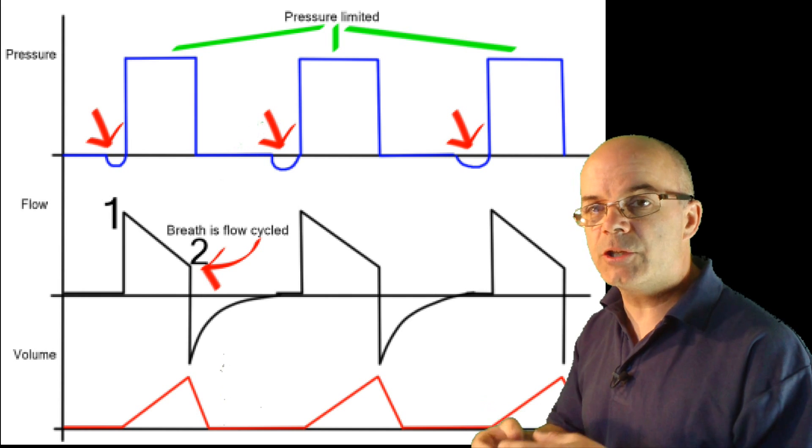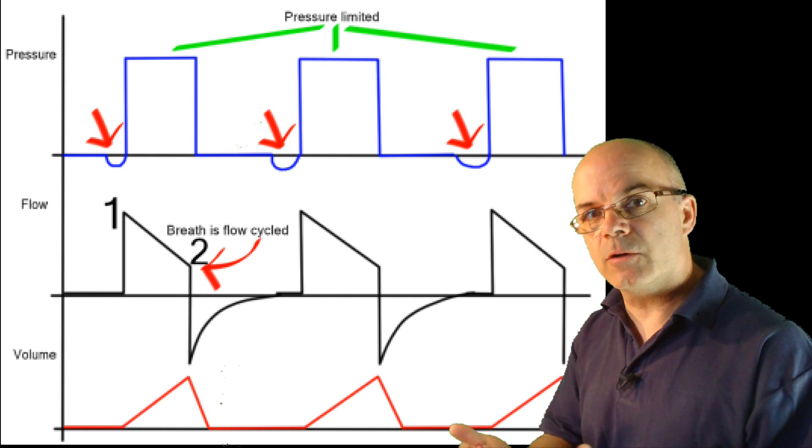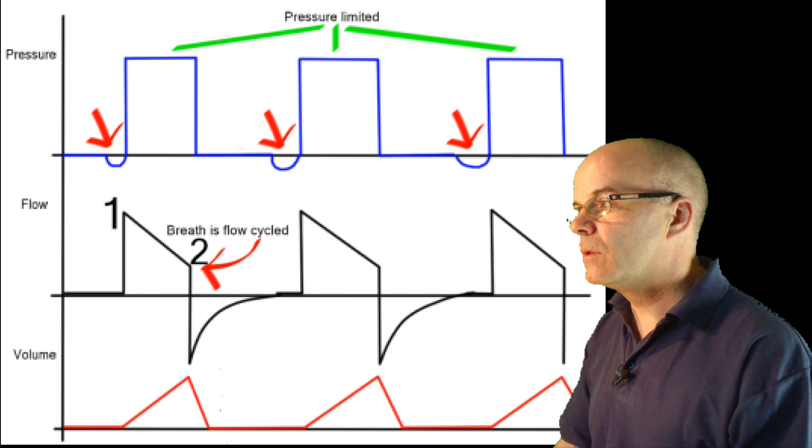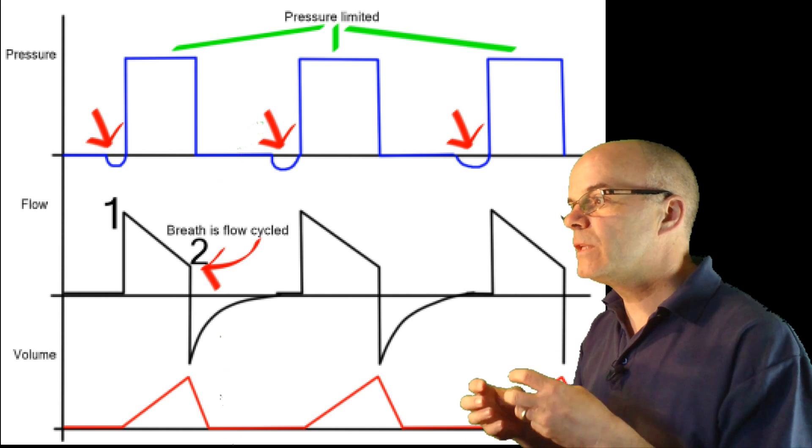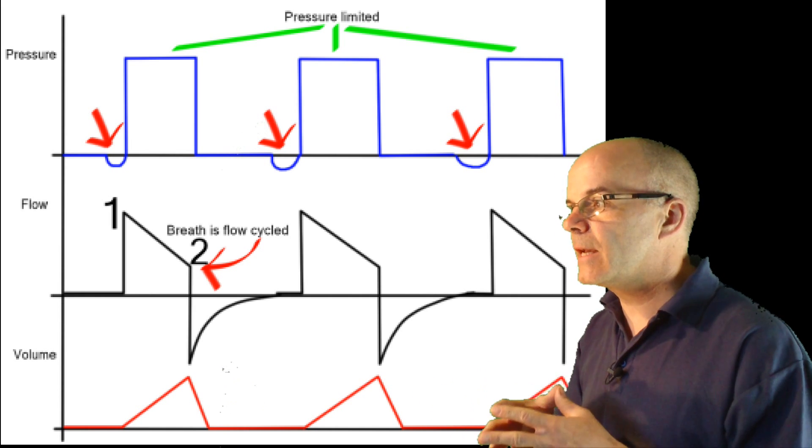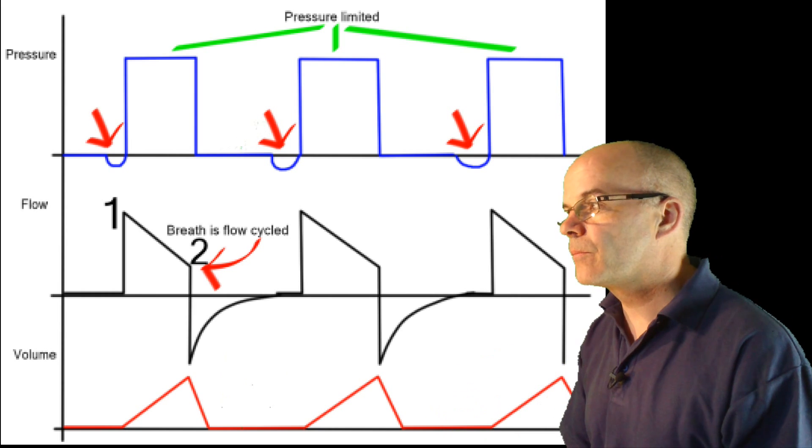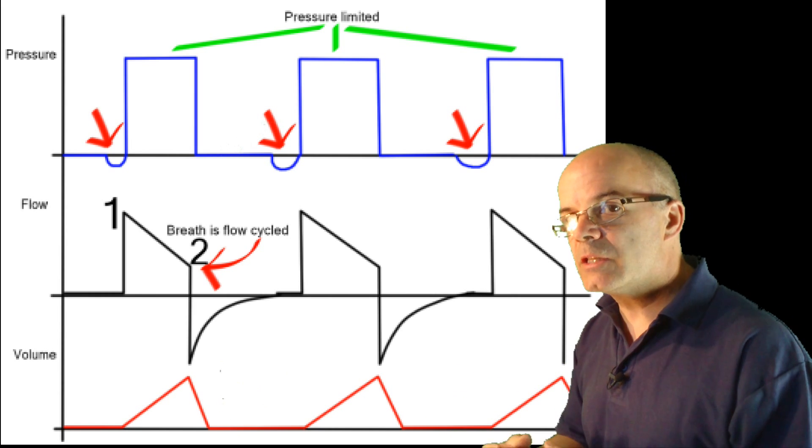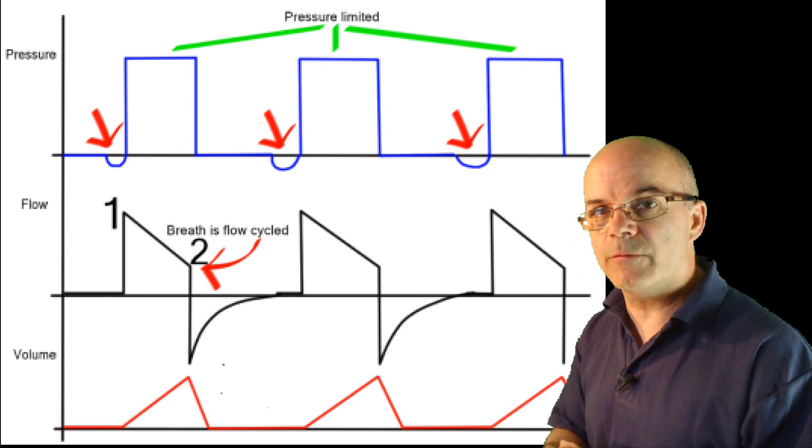In pressure-controlled ventilation, we set the rate, so the breath is time-cycled. The consequence of this on the volume curve is that we don't see an inspiratory pause. As soon as the ventilator detects a reduction in the flow rate, it triggers to expiration. The breath is not held for a period of time, as it would be in pressure-controlled ventilation.